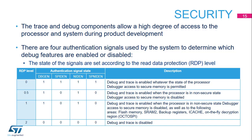The trace and debug components allow a high degree of access to the processor and system during product development. In order to protect user code and ensure that debug features cannot be used to alter or compromise the normal operation of the finished product, these features can be disabled or limited in scope. There are four authentication signals used by the system to determine which debug features are enabled or disabled. They are set according to the Read Data Protection, or RDP, defined by an option byte. When security features are enabled and RDP level is 0.5 or 1, debug of non-secure software is supported, but debug features are not functional when the core runs in secure state.